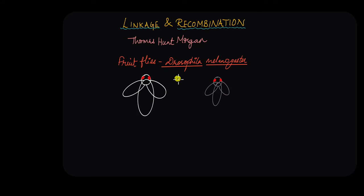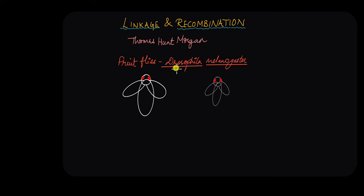Sometimes the question that scientists ask is not why is something happening but rather why isn't something happening. That was a question embryologist Thomas Hunt Morgan encountered when he was working with his model organisms, fruit flies, their Latin name being Drosophila melanogaster.